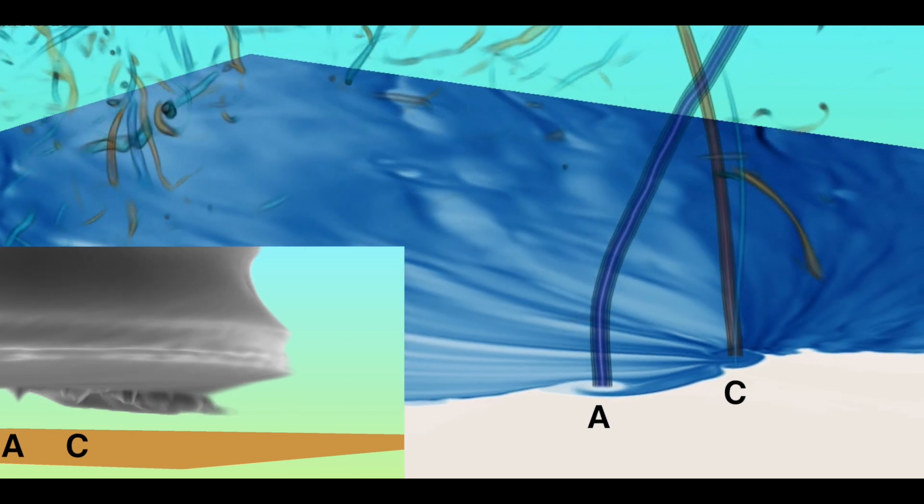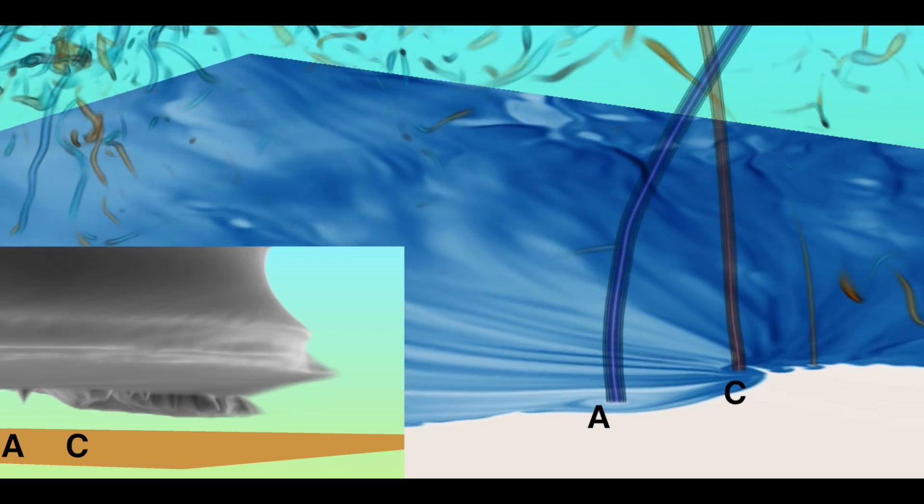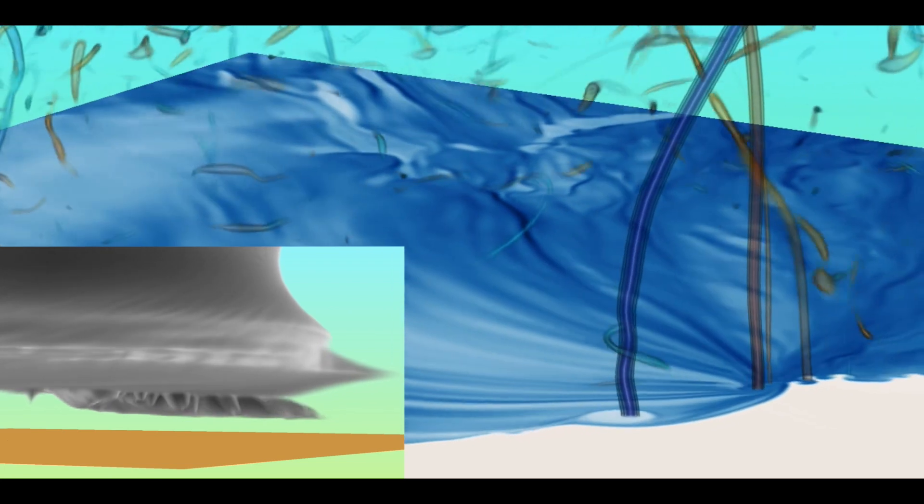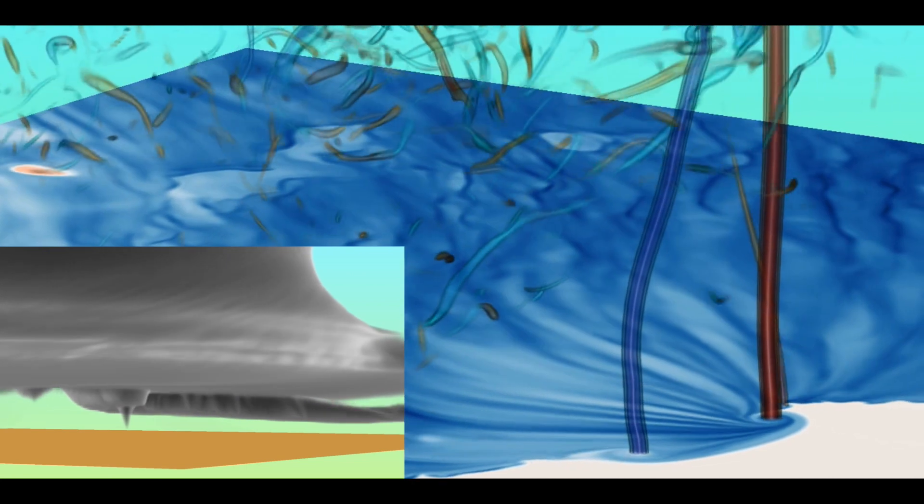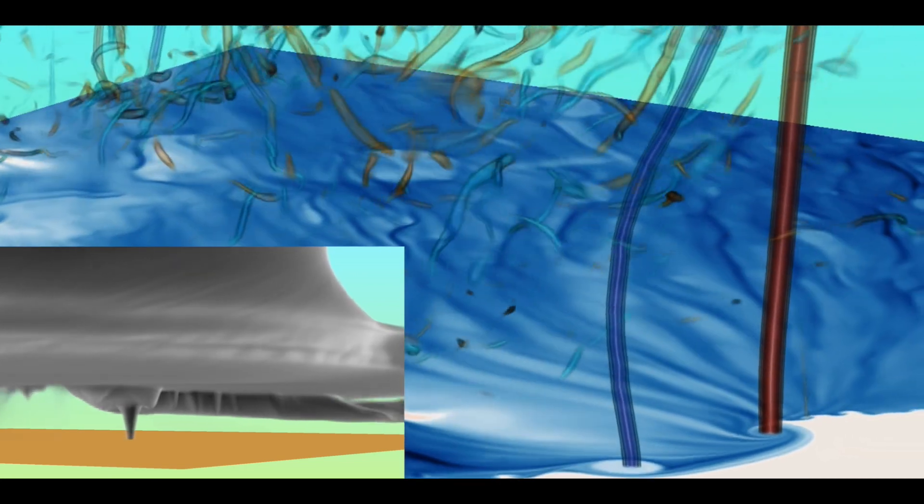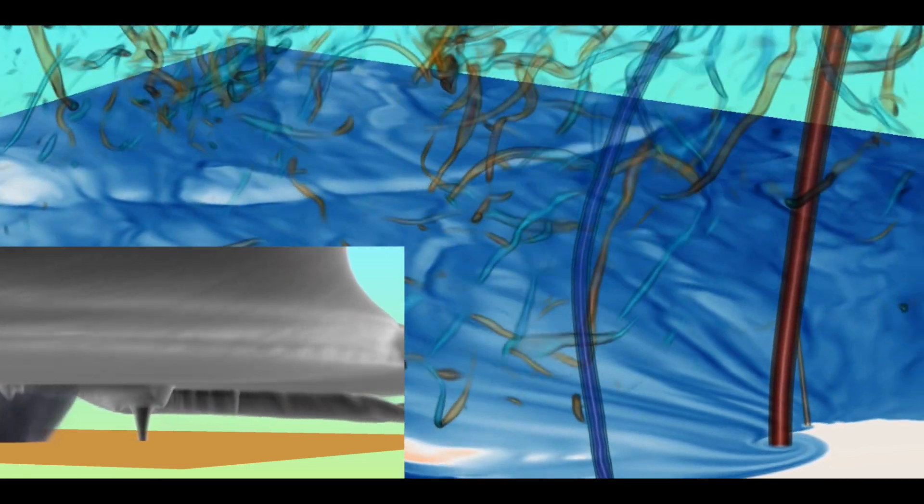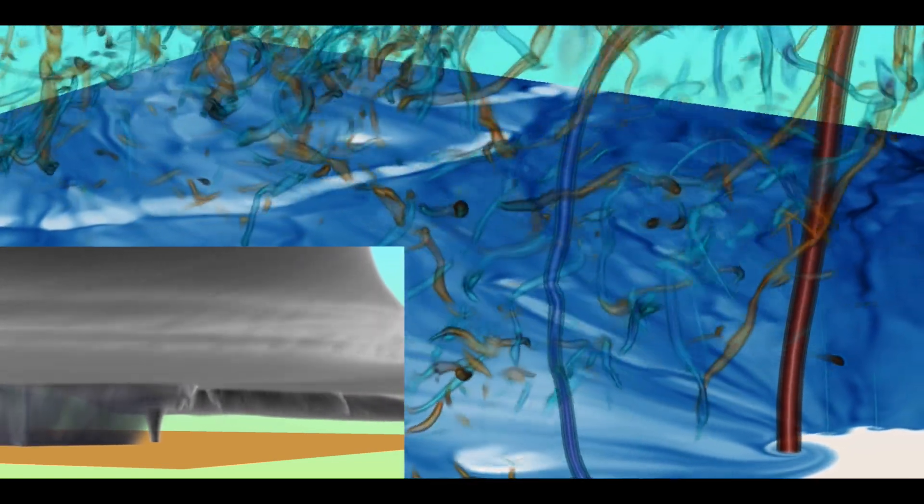So you've seen this already. A is for anticyclonic, C is for cyclonic. Now I can compare what's going on visually with what's going on in the vorticity field. And notice you've already got a tornado going on here before it actually shows up. This is exciting. This means that there may be ways to sort of view what's going on in the storm and give us better forecasts of what's going on.